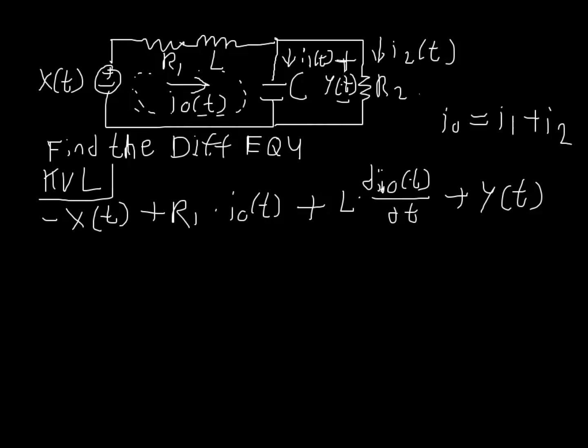That will come into play because we can find what i1 is. So let's solve for i1 here. We know that the voltage across the inductor is equal to the derivative. The same thing applies with the current across the capacitor. So we know that the current i1 is equal to the derivative of the voltage across the capacitor with respect to time times c.